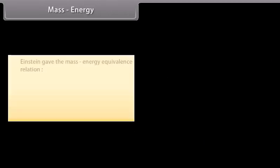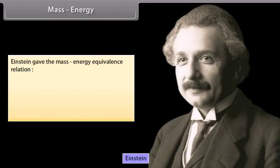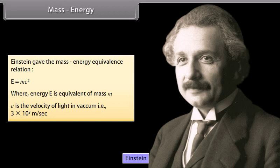Mass energy. Einstein gave the mass energy equivalence relation E is equal to MC², where energy E is equivalent of mass M, C is the velocity of light in vacuum, that is 3 × 10⁸ meter per second.